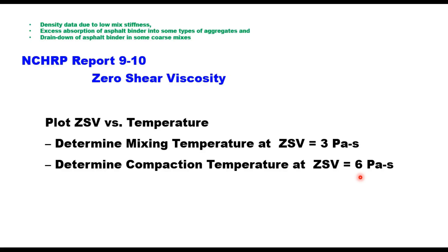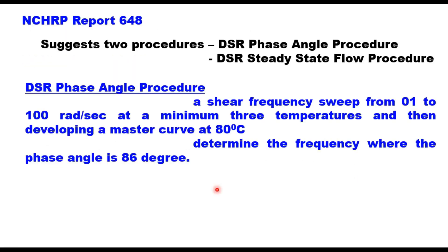However, determination of zero shear viscosity is a long procedure, and therefore this document recommends a simpler and widely accepted procedure. NCHRP Report 648 suggests two procedures to determine compaction and mixing temperature for modified binders: one is the phase angle procedure and the other is the steady state flow procedure.